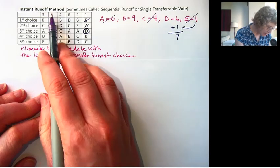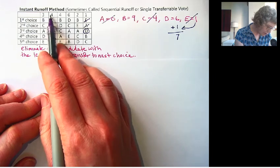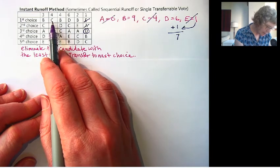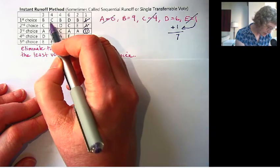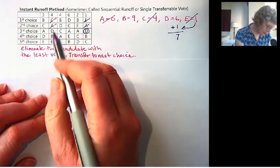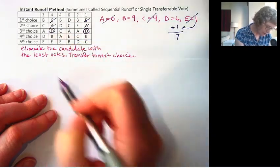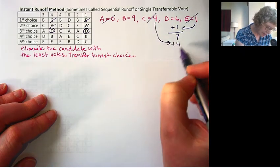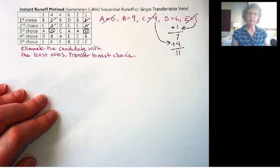So we're going to take these 4, they're all in the same category. C was their first choice, A was their second choice, D was their third choice. So these 4 votes also get transferred to D, and D has 11 votes.